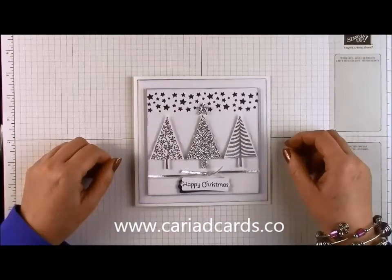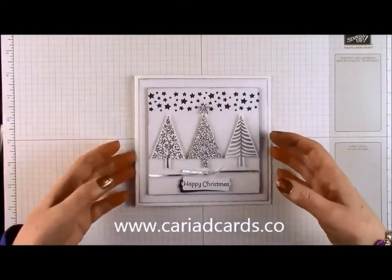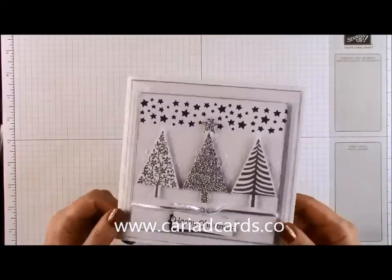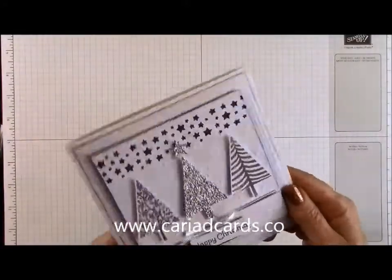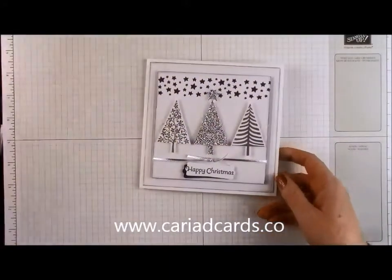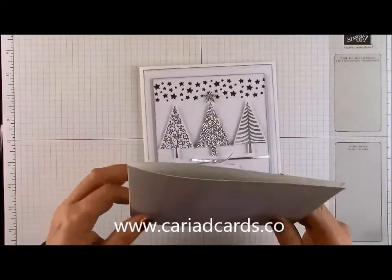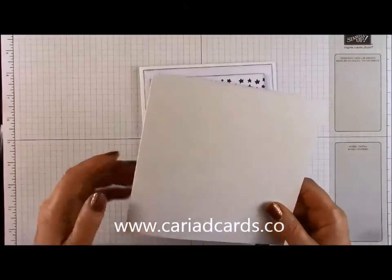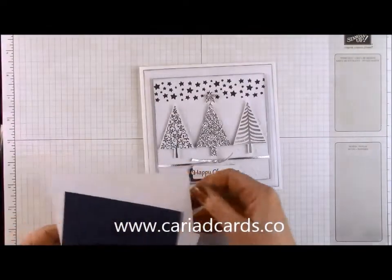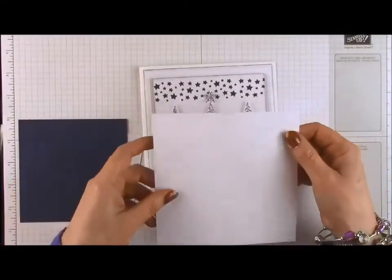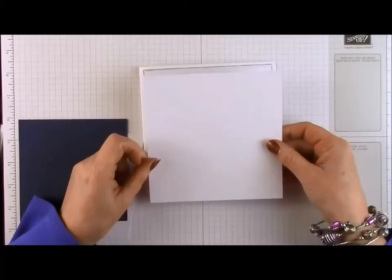Hi everyone, thank you for joining me Debbie at CariadCards.co and today I'm going to be showing you how I made this card. All sparkly, I hope the light picks that up for the camera. Started off with a 6 inch by 6 inch card blank. Don't worry about any of the measurements, I will put them onto my blog CariadCards.co. Cut a piece of Whisper White for the first layer.